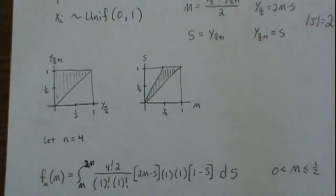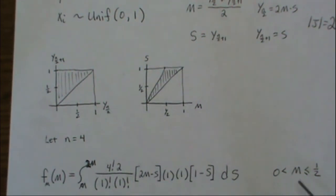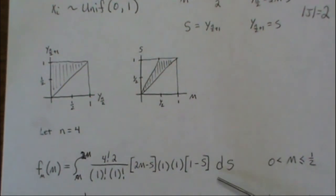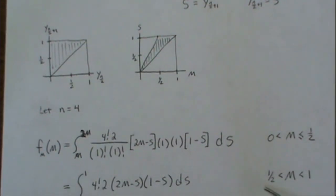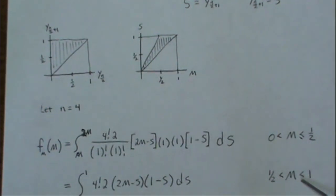So we're integrating from 2M to 2M of our equation. And then when we're between one half and one, then we're integrating from 1 to M, or M to 1.